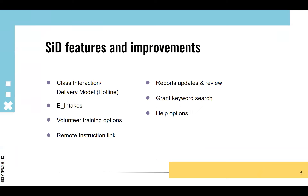One of those is something we call the class interaction, otherwise known as the delivery model, which is very closely linked to the hotline. That was a class descriptor we added last fall. The biggie is the E-intakes, or online registration. We'll talk through that. Some volunteer training options were adjusted and changed to align with the new volunteer policy, so instead you can track which trainings your volunteers have attended.